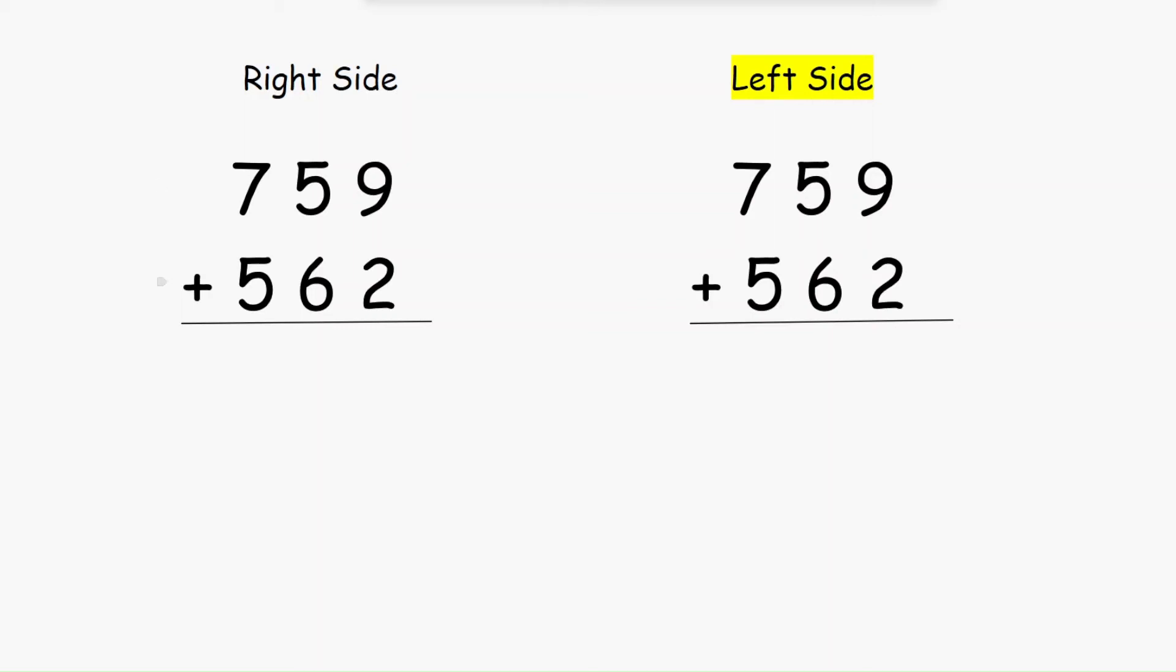Hello friends, today we will learn some Vedic addition tricks. Usually we will add numbers from the right side. Here we will add this number: 9 plus 2 equals 11, keep 1 here and carry 1.